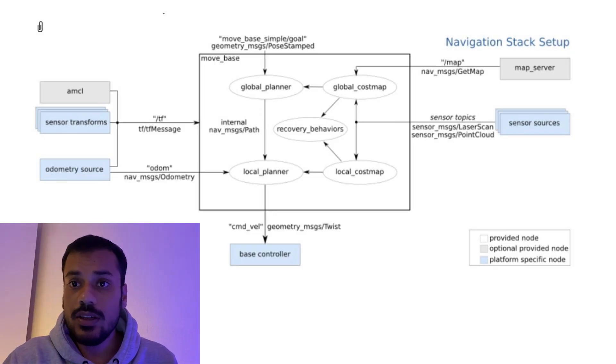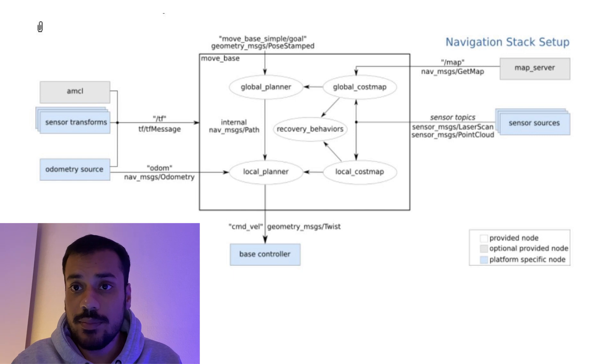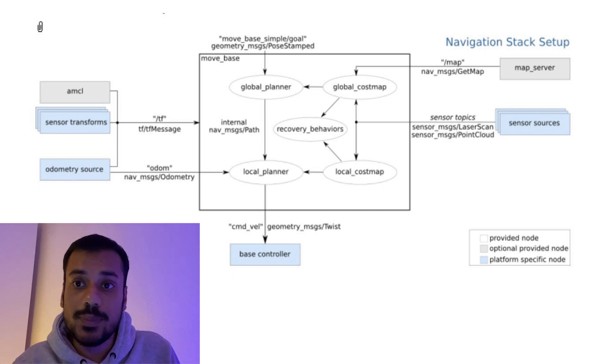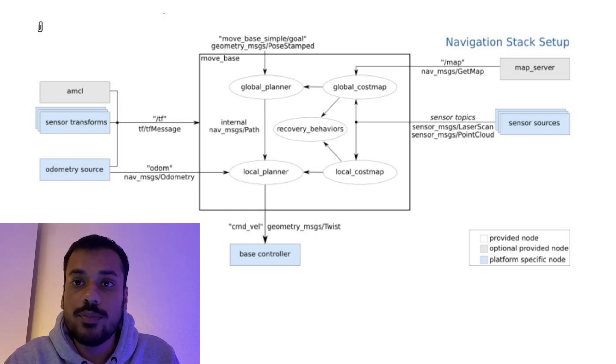We'll talk about both the designs — navigation 1 in ROS1, which will be called the nav stack, and navigation 2 in ROS2, which will be called nav2. So to begin with, what exactly is the nav stack in ROS1? Nav stack is a collection of packages running together in harmony for navigation in mobile robotics. You have a mobile robot, and the nav stack is responsible for moving it from point A to point B. It takes in information from odometry, sensor streams, the goal pose, and optionally a map, and then spits out velocity commands for the robot to follow.